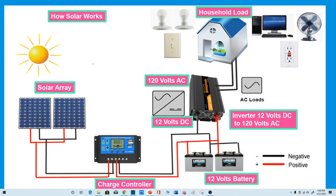A charge controller or regulator is basically a voltage regulator to keep batteries from overcharging. It regulates the voltage coming from the solar panels going to the battery. Most batteries need around 14 to 14.5 volts to get fully charged.